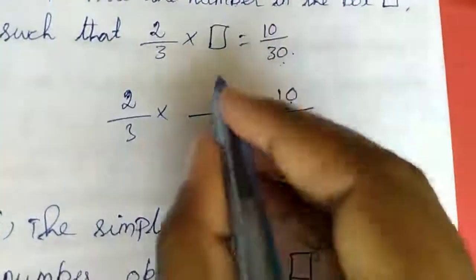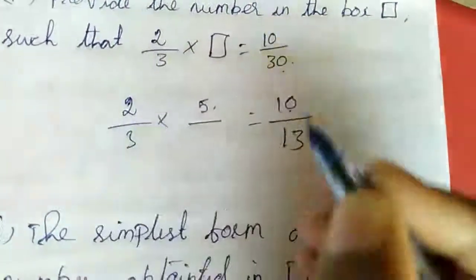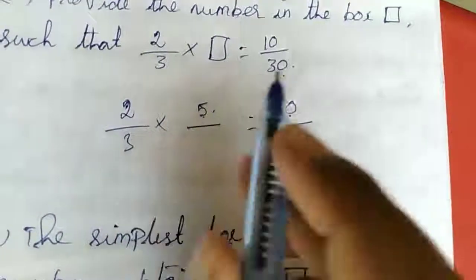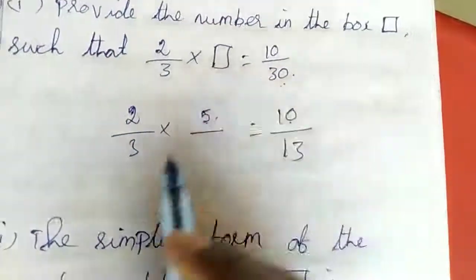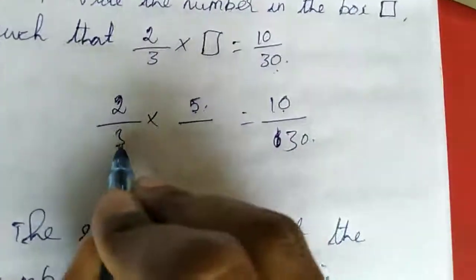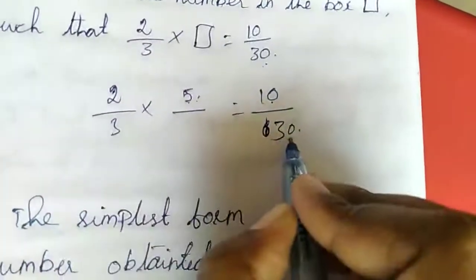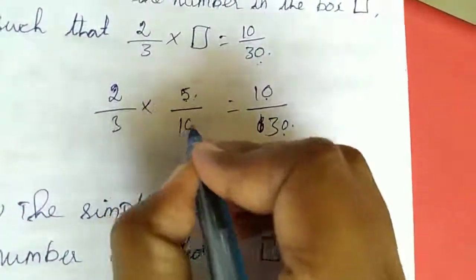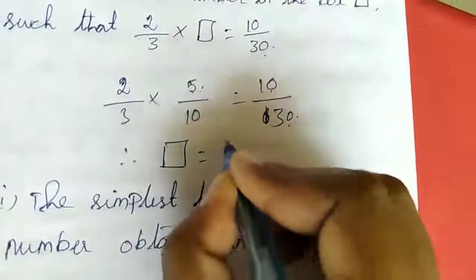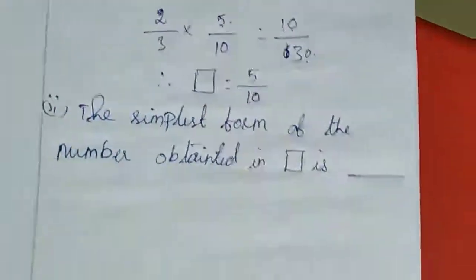Two times which number gives 10? Two fives are 10. So the numerator is 5. Three times which number gives 30? Three tens are 30. So the fraction is 5/10. Therefore, the box contains 5/10. This is the answer.